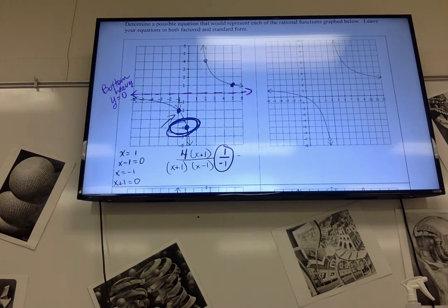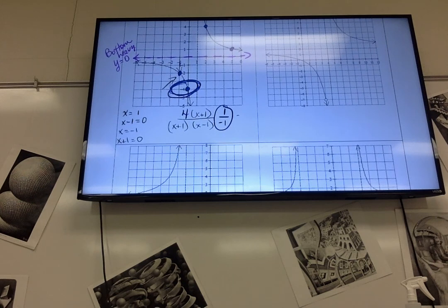And then we were also supposed to multiply these out, and I've already run out of room. So I have on top 4x plus 4, and on bottom, that's the difference of two squares, so it's x squared minus 1. Hard to see, sorry.